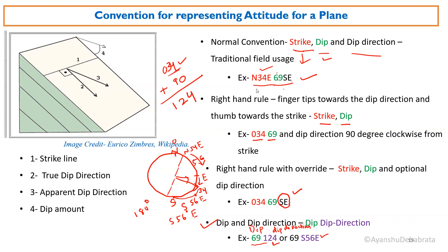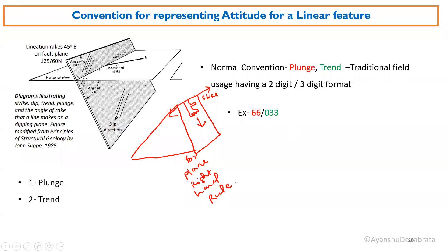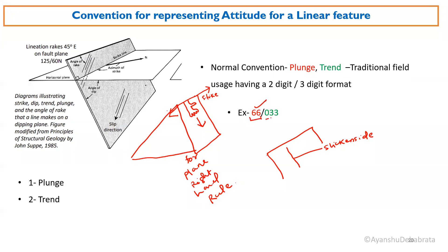Now we will go to the next one: the convention of representing attitude for a linear feature. If there is a fault plane with a slickenside or lineation on it, to measure this, we need two features for attitude measurement of any linear feature — plunge and trend. To write those two things, you just write first the plunge amount, then the trend amount.